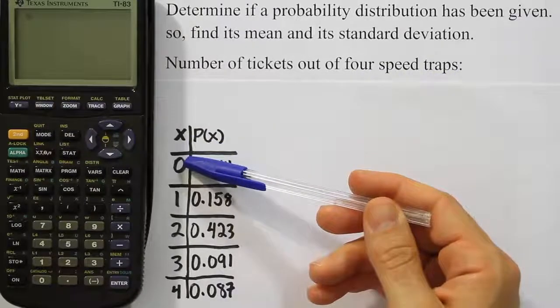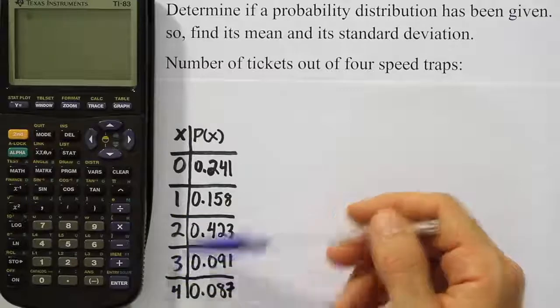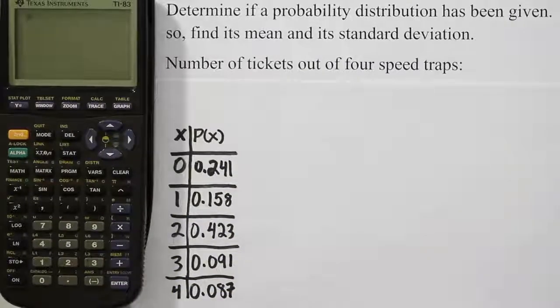We're looking at the number of tickets out of four speed traps. So we have x equals either 0, 1, 2, 3, or 4, and we have the probabilities given there that are associated with that.